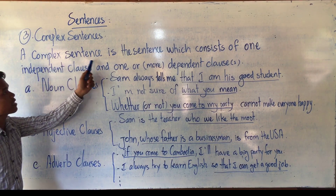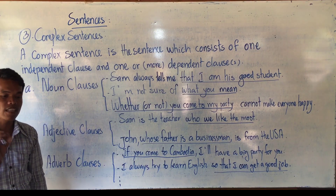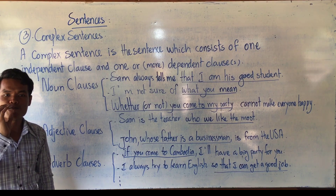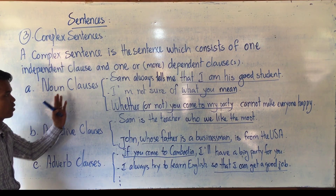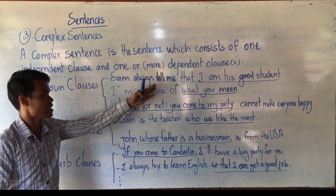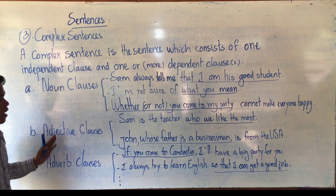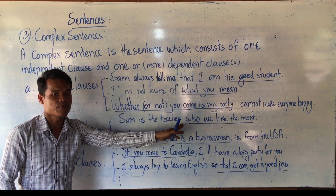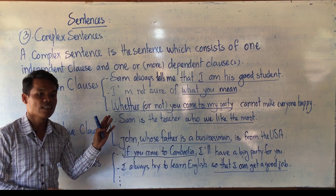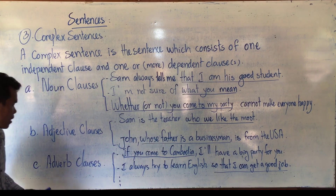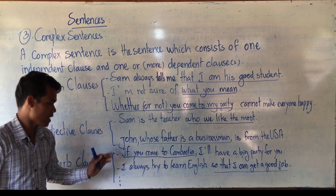Again, a complex sentence is a sentence which consists of one independent clause and one or more dependent clauses. When you see complex sentences, think of three clause types. Noun clauses have three subtypes: that-clauses, wh-clauses, and whether-clauses. Adjective clauses have two subtypes: defining relative clauses with no comma, and non-defining relative clauses with a comma. For adverb clauses, nine were taught to you; here only two examples are given — adverb clause of condition and adverb clause of purpose.